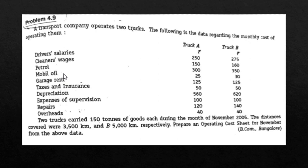A transport company operates two trucks. The following is the data regarding the monthly cost of operating them. Expenses include driver's salary for truck A and B, cleaner's wages, petrol, mobile oil, carriage, rent, taxes and insurance, depreciation, expenses of supervision, repairs, and overheads. Two trucks carried 150 tons of goods each during the month of November 2005. The distance covered was 3,500 kilometers and 5,000 kilometers respectively. Prepare an operating cost sheet for November from the above data.